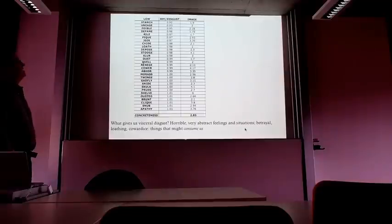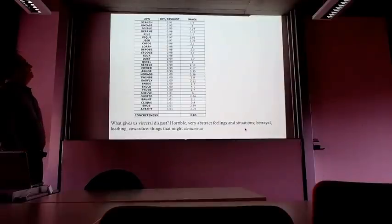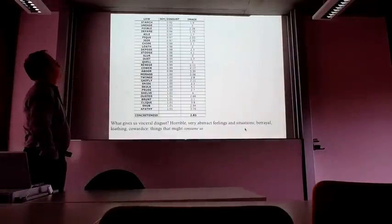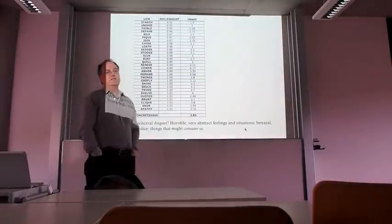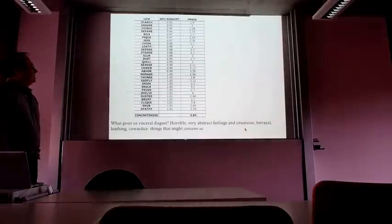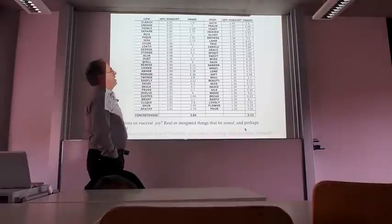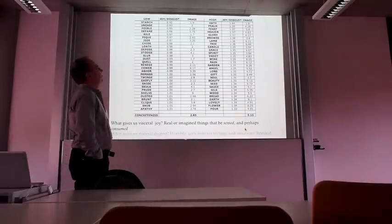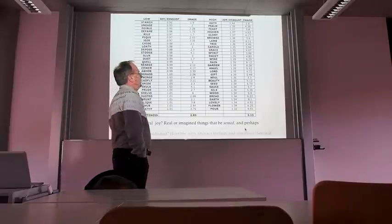When you start thinking about it, it's an interesting measure because joy and disgust are more or less opposite, and if you take that ratio you're really putting words on a single dimension running from visceral goodness—joy—to visceral badness—disgust. Looking at words lowest on that ratio, most strongly associated with disgust, you get words like stanch, unease, riled, loathed, deposed, slurred—quite negative words, so the model seems to be doing a reasonable job distinguishing negative from positive. At the high end are biblical words and positively associated words like feast, wine, rain, garden, and gift.